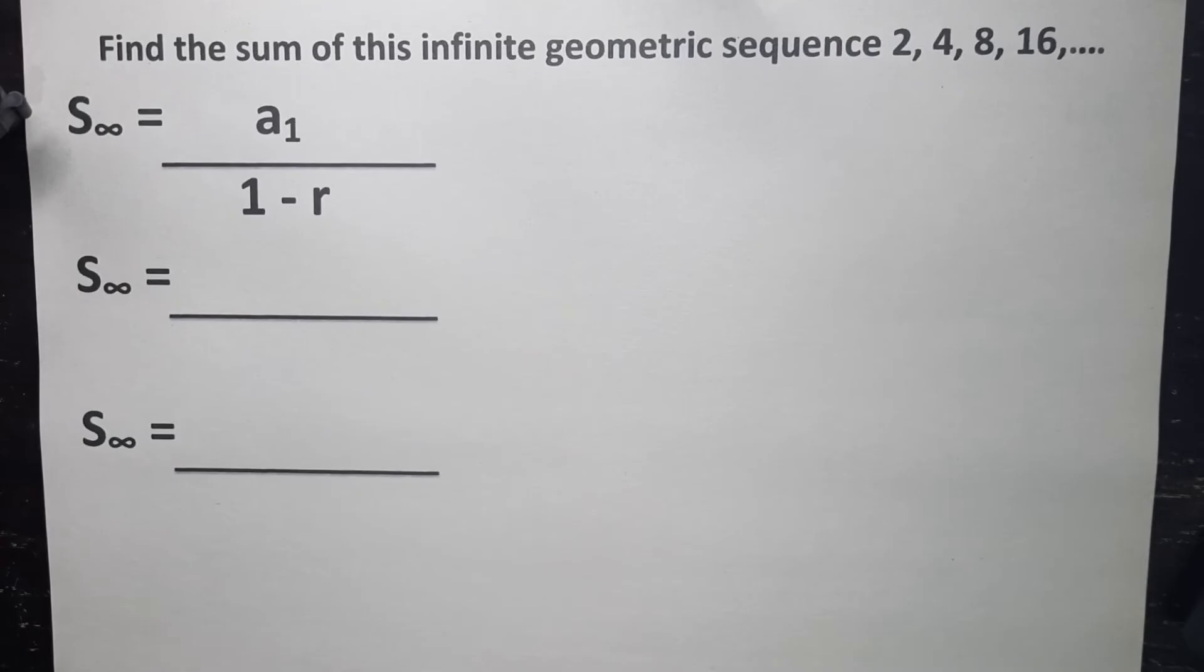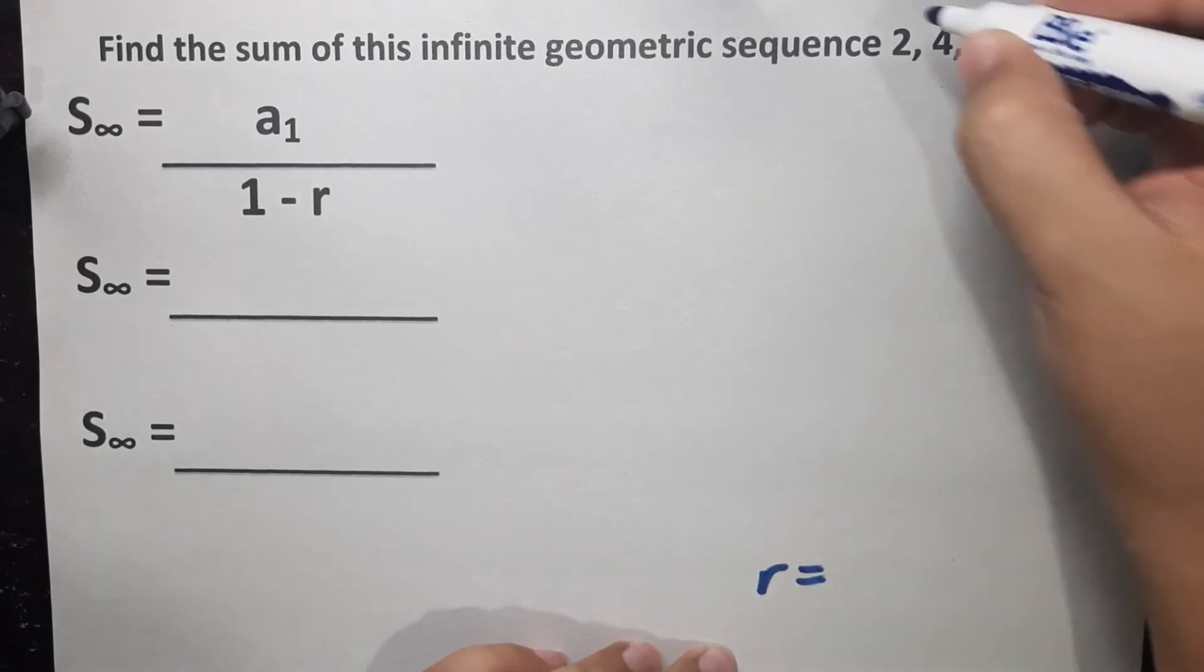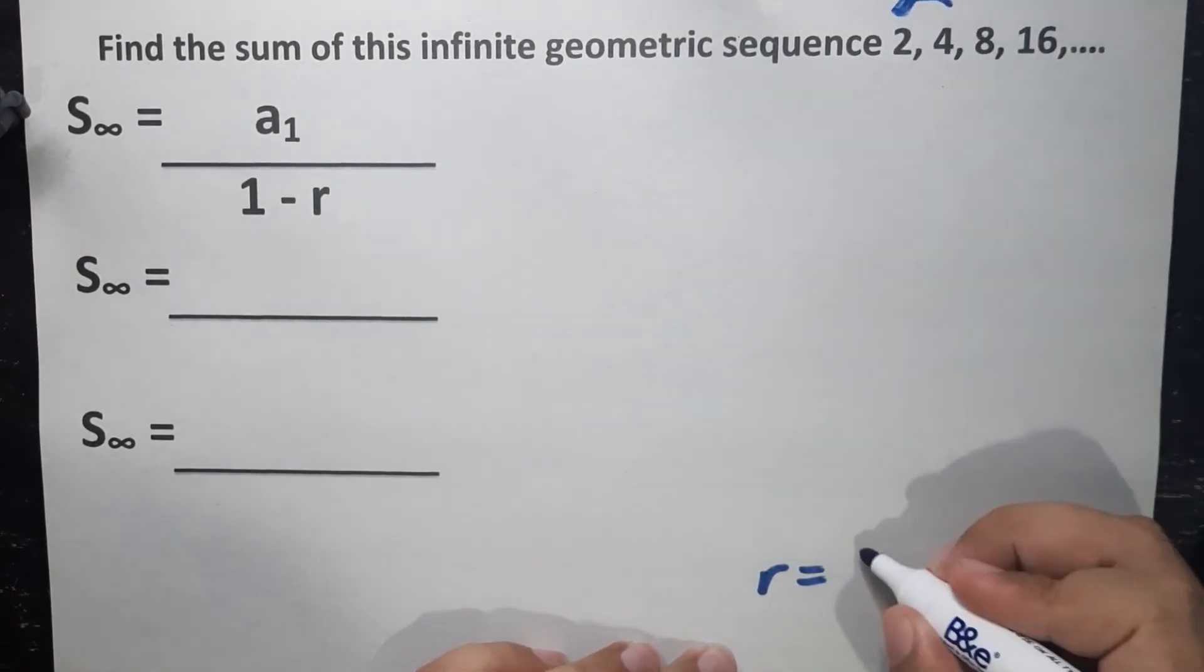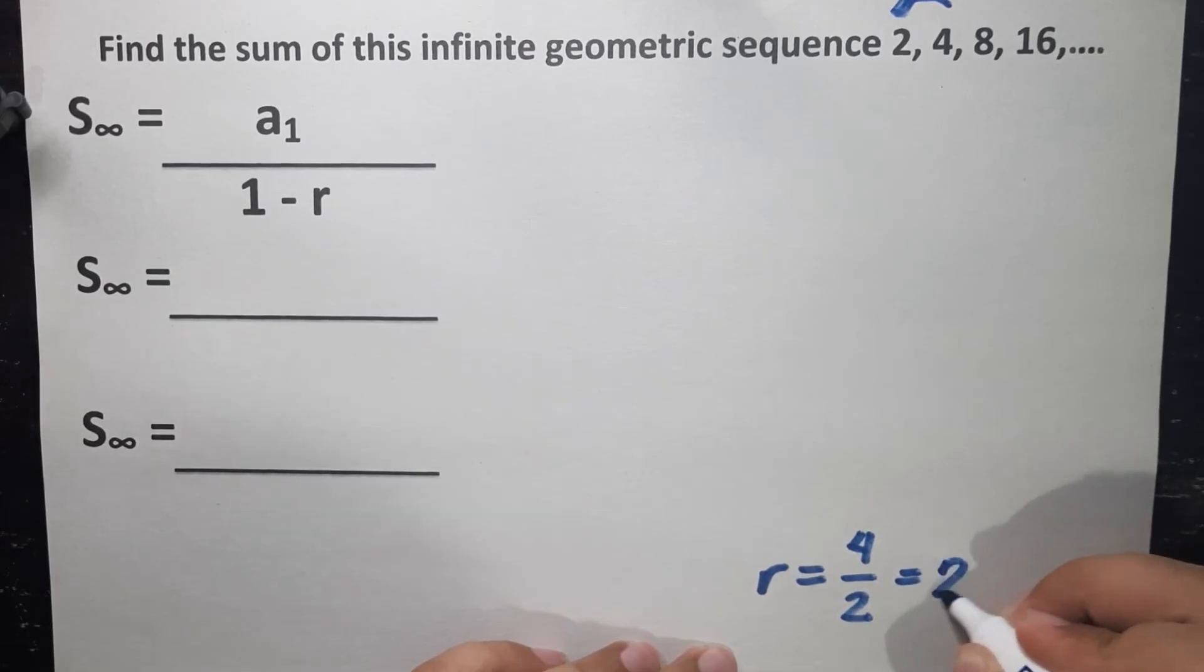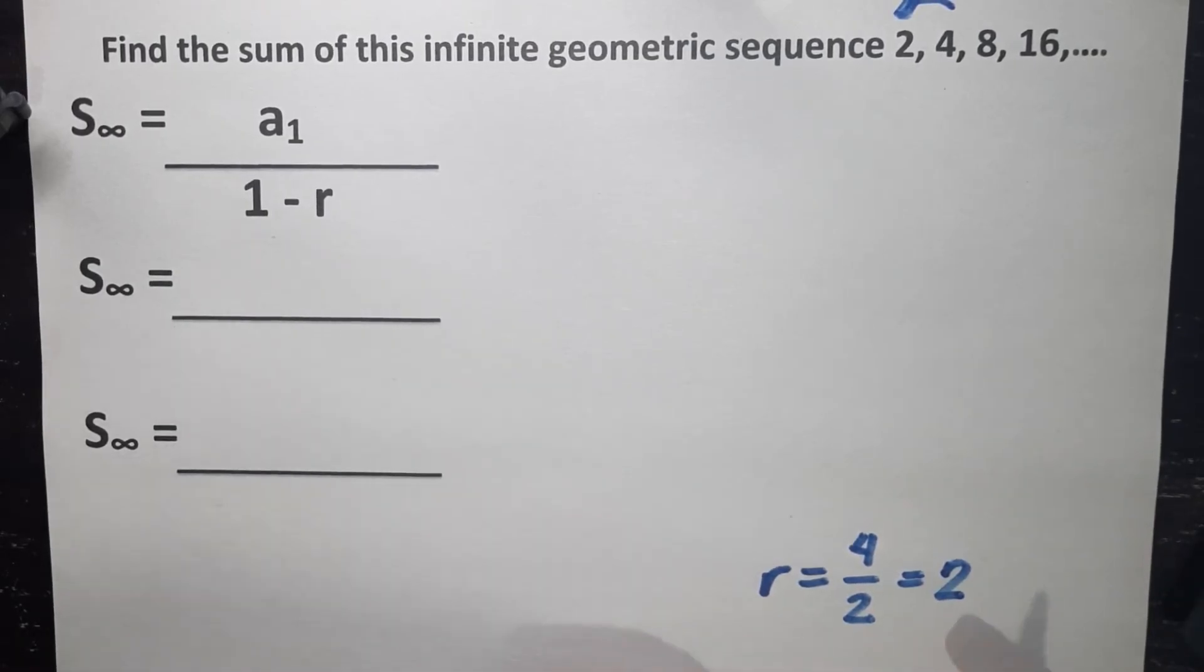For this last example, this is something that all of you will love because this is going to be very easy. Find the sum of infinite geometric sequence, 2, 4, 8, 16. Again, first step, find the common ratio. Current term divided by the previous term. So 4 divided by 2 will give you 2. But then again, you notice that the common ratio is 2, which is what we have discussed earlier, is outside the condition. So which means, if your common ratio is beyond the condition for solving the sum to infinity of the geometric sequence, which means there's no need to solve anymore.